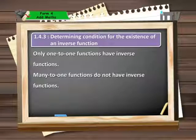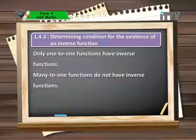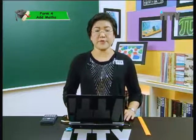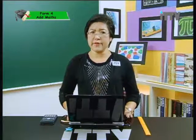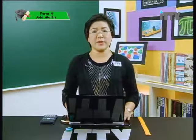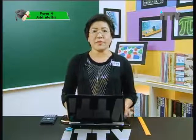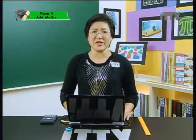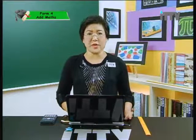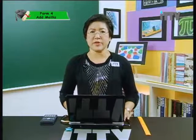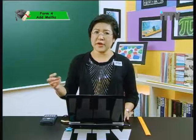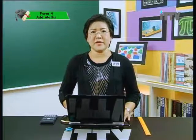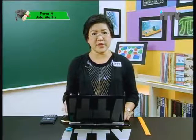To conclude: only one-to-one functions have inverse functions. Many-to-one functions do not have inverse functions. One-to-one functions will have inverses simply because in a one-to-one function, every object is mapped onto only one image. So if you go backwards — which is what the inverse function does — it will map every image back to one object. Hence the inverse function will also be a one-to-one relation, and since a one-to-one relation is a proper function, both the function and its inverse are proper functions.